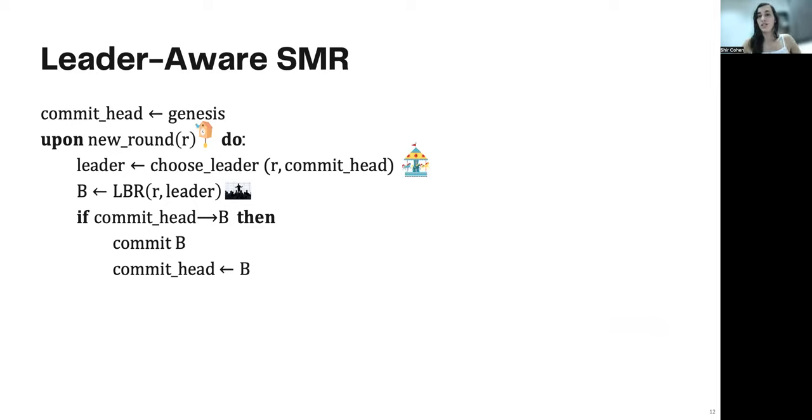The following algorithm shows how to combine all of these ingredients to create a leader-aware state machine replication. We start by defining the commit head to be some genesis block. Then we do the following. Every time the pacemaker produces a new round notification, we elect a leader for that round using the leader election mechanism. With that leader and that round, we call the LBR, trying to create a new block for that round. This LBR always returns a block. Maybe not a new one, but it always returns a block. And then we check. If the new block extends my commit head, I commit the new block and update the commit head accordingly. If it doesn't, I'm just moving on until the next one.